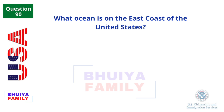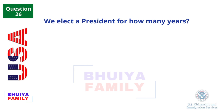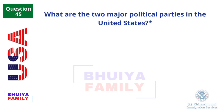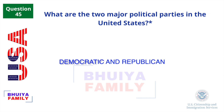What ocean is on the east coast of the United States? The Atlantic Ocean. What are the two major political parties in the United States? Democratic and Republican.